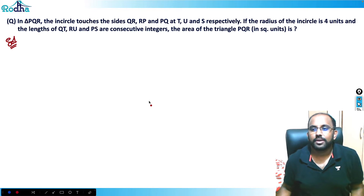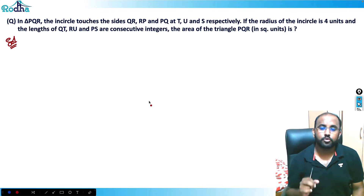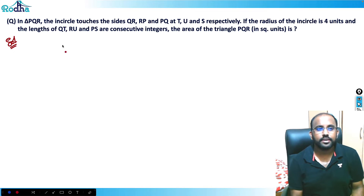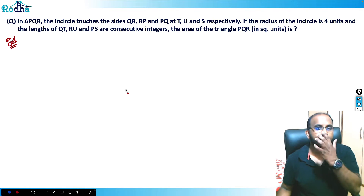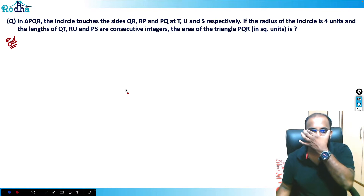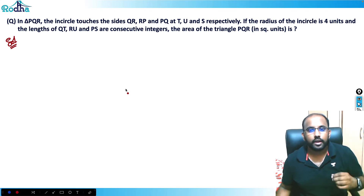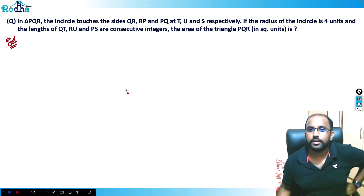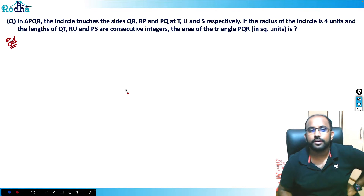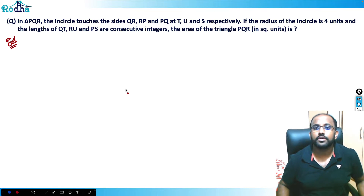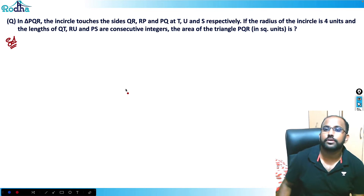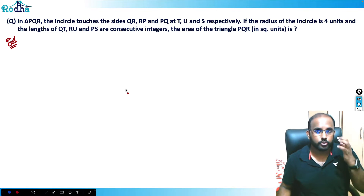Let's look at this next question. In triangle PQR, the incircle touches sides QR, RP, and PQ at T, U, and S respectively. If the radius of the incircle is four units and the lengths of QT, RU, and PS are consecutive integers, find the area of triangle PQR.